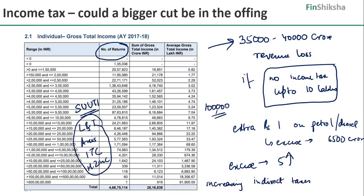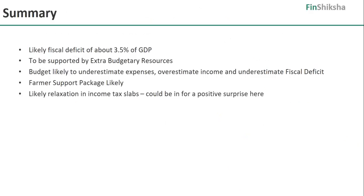To summarize: the government is likely to report a fiscal deficit of about 3.5 percent, but this will be supported by extra budgetary resources — look carefully at those details. The budget is likely to underestimate expenses, overestimate income, and underestimate the true fiscal deficit. A farmer support package is likely, and a relaxation in income tax slabs is also expected — possibly no income tax up to 5 to 6 lakhs at a minimum, with a possibility of going up to 10 lakhs. We would be surprised if the income tax change doesn't happen heading into this election budget. Thank you.